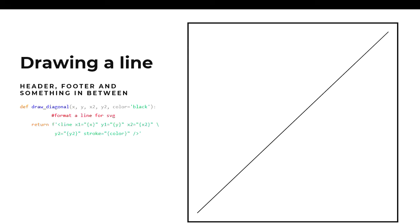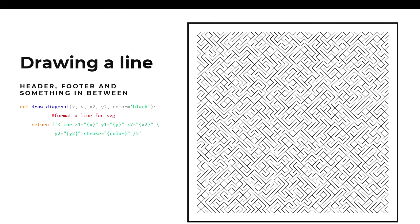First step: you need to know how to draw a line. I didn't want to use any libraries — I wanted to know what I was doing — so I used just string manipulation. A line has an X starting point, a Y starting point, an X ending point, a Y ending point, and some kind of styling: a stroke width, a stroke color. If you make it randomly from top-left to bottom-right or bottom-left to top-right, and repeat it a bunch of times, you end up with a pattern. And each time you run it, it changes, giving you a lovely generated effect.